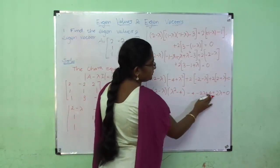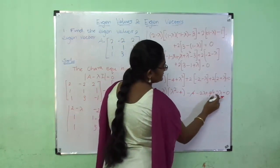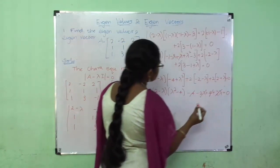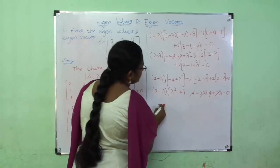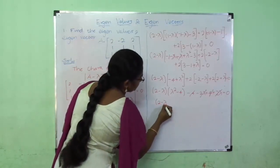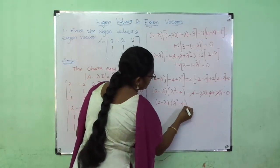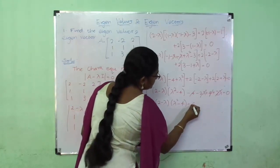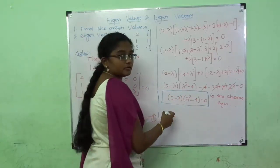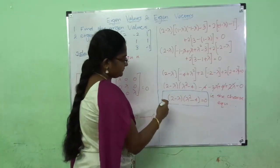The -4 and +4 cancel, and the -2λ and +2λ cancel. Writing the remaining terms: (2-λ)(λ)(λ² - 4) = 0. Wait — the simplified characteristic equation becomes (2-λ) times λ times (λ² - 4) = 0. This is the characteristic equation of matrix A.